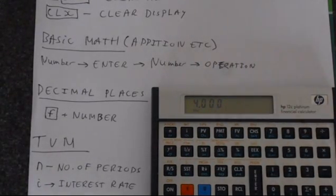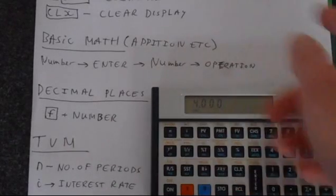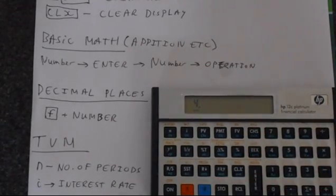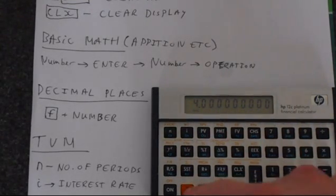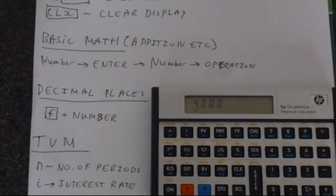You can adjust the decimal places on the display. You could have no decimal places by pressing F and then 0, or you could have 9 decimal places by pressing F and 9. But usually you'd be working with either 2 or 3 decimal places.